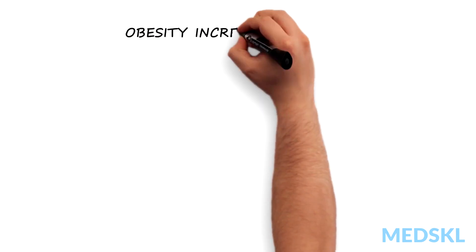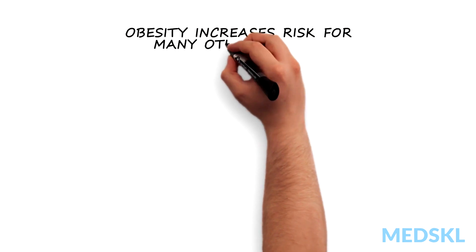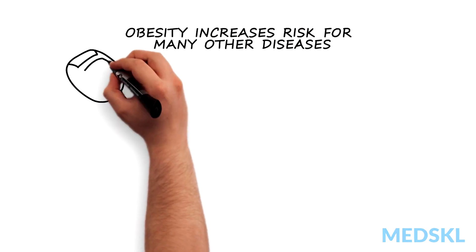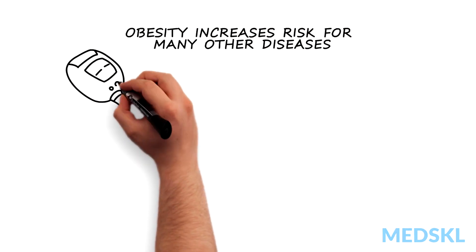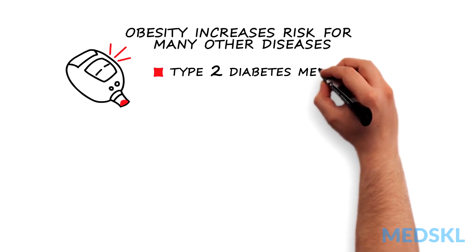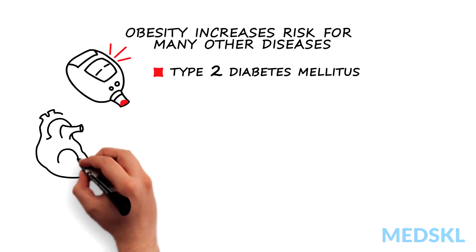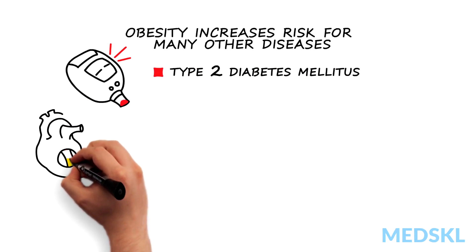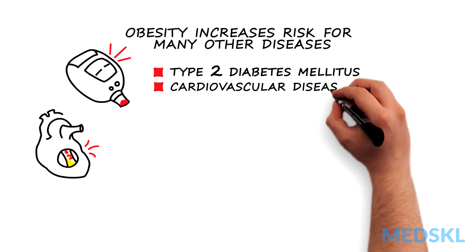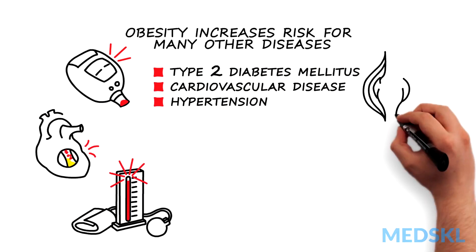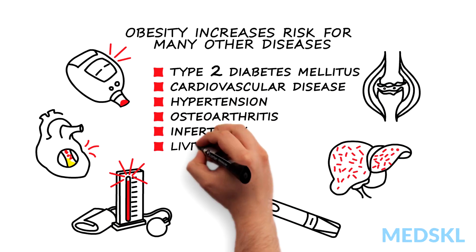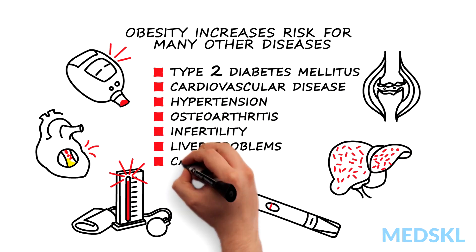Obesity significantly increases the risk for many other diseases. The strongest correlation is seen between obesity and the development of type 2 diabetes mellitus. However, a patient who is obese also has a higher likelihood of developing cardiovascular disease, hypertension, osteoarthritis, infertility, liver problems, and even cancer.